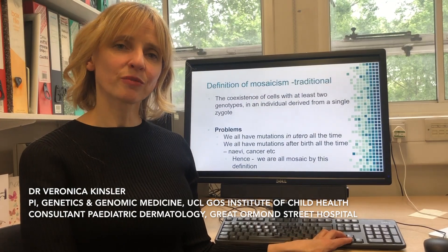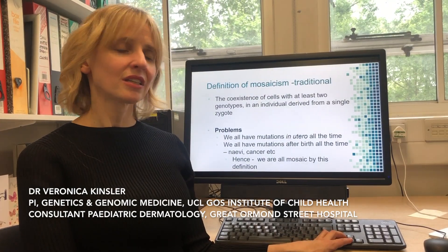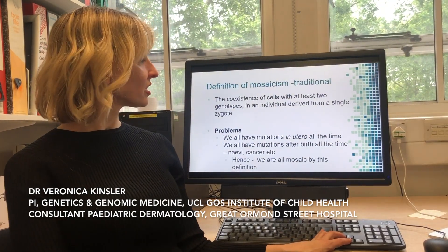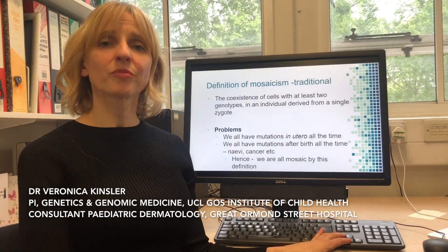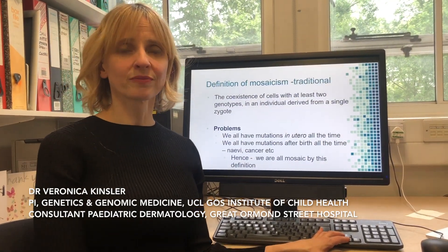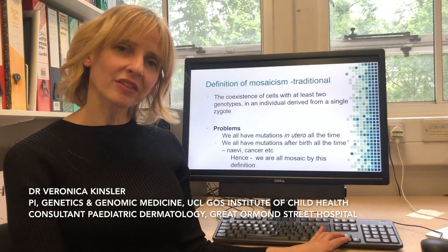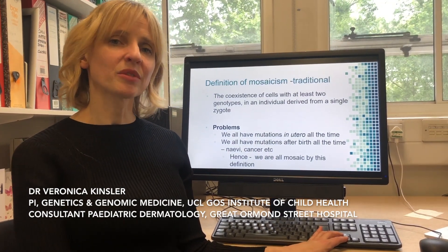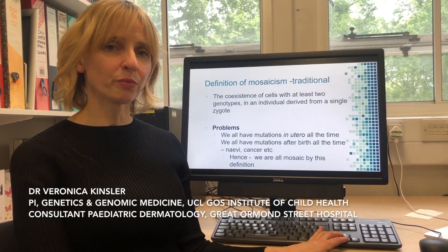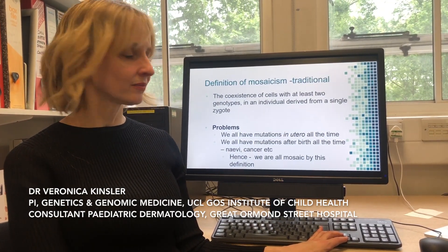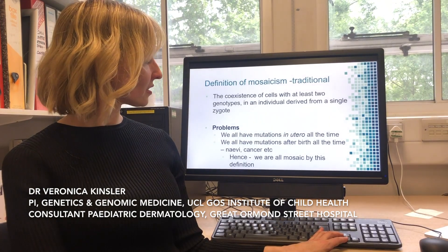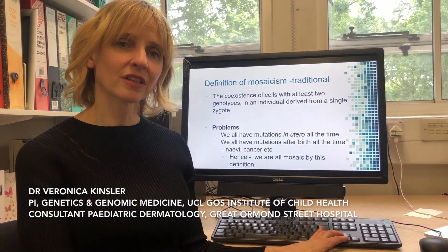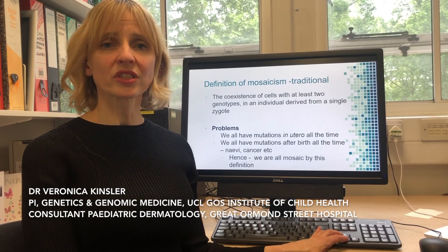The traditional definition of mosaicism is the coexistence of cells with at least two genotypes in an individual derived from a single zygote. But the problem with this definition in the modern age is that we now know that everybody develops mutations in the womb with every single cell cycle, and that we all have mutations after birth as well in our tissues. So by this definition, we are all mosaic.